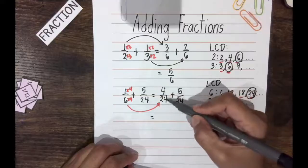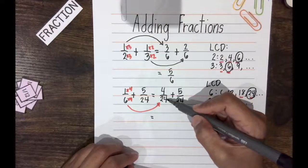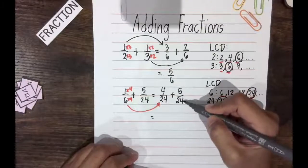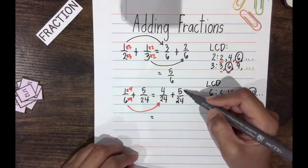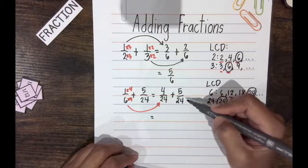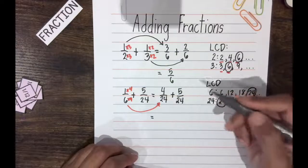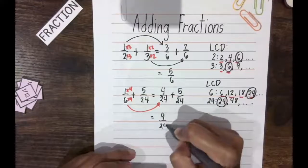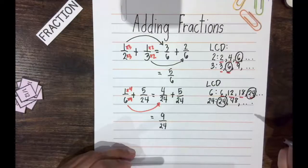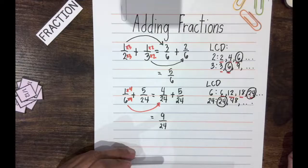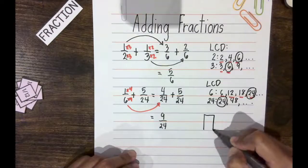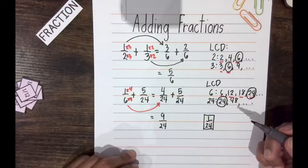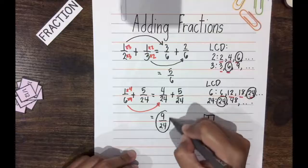So, I have 4/24, which means I have 4 pieces of 1/24 tiles, plus 5/24, which means adding 5 pieces of 1/24 tiles. So, how many 1/24 tiles do I have altogether? I have 9/24, which means I have 9 pieces of 1/24. So, here, I use the tiles 1/24. So, 9/24.